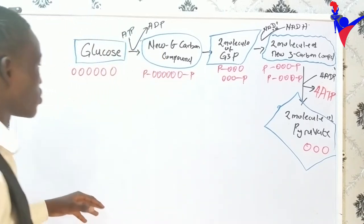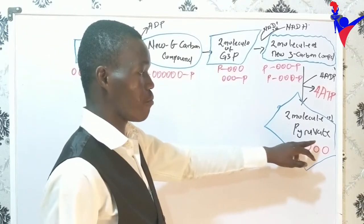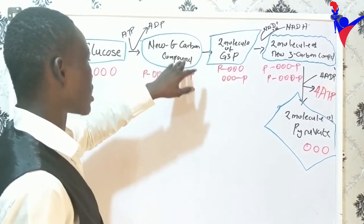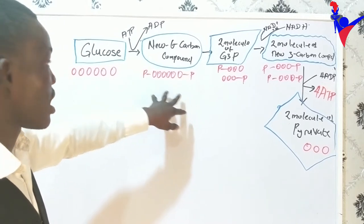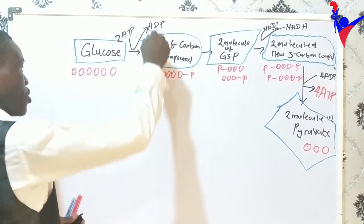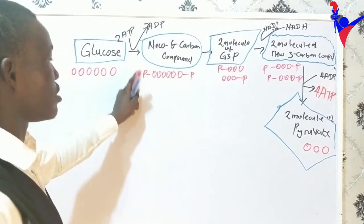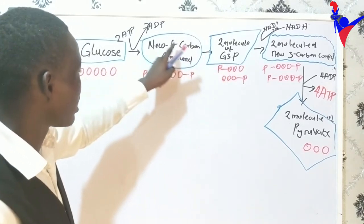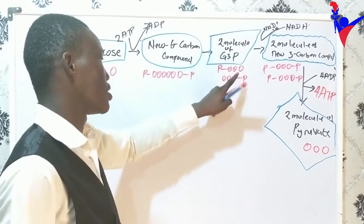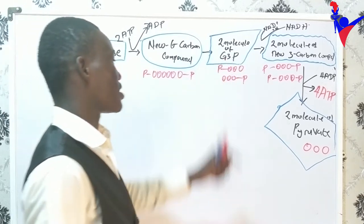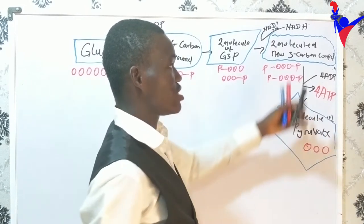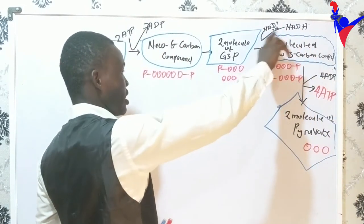In the last class, we looked at glycolysis — the breakdown of glucose to give two molecules of pyruvate. The first step is the phosphorylation of glucose to give a new 6-carbon compound by adding two moles of phosphate. At that point, we lost 2 ATP. So this was what we borrowed from ATP. Then this new 6-carbon compound is split into two molecules of glycero-di-3-phosphate. After that, we phosphorylate again under an oxidation reaction, and at this point we get NADH — an electron carrier.